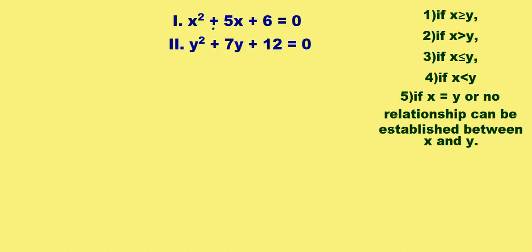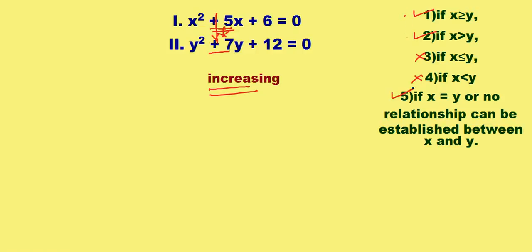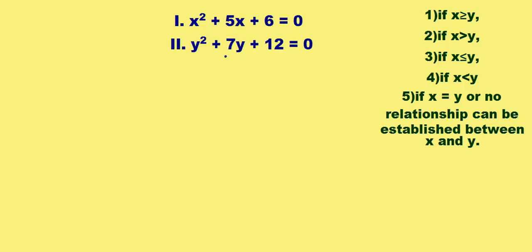Let's see the middle terms. This is 5 and this is 7. 5 is increasing to 7. If the middle number increases, the answer will be x is greater than or equal to y, or x is greater than y — those can't be the answer. x is less than or equal to y can be, x is less than y can be, or no relationship can be established.